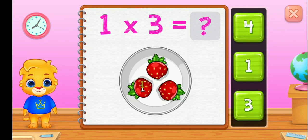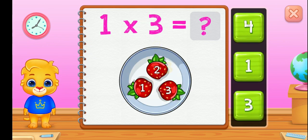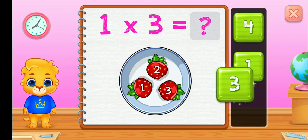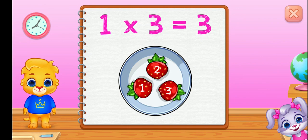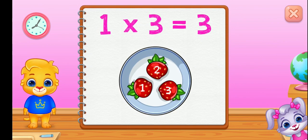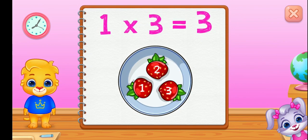One, two, three. One group of three equals three.